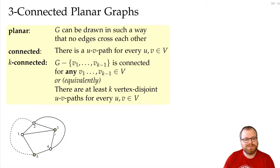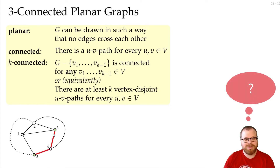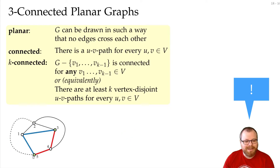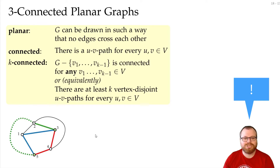What about vertices 5 and 3? We take this edge here, we take that path, we take that path, and now we see why the previous graph was not 3-connected. There is only this edge left, so to take another path from 5 to 3 we have to pick this edge. So without this edge, the graph cannot be 3-connected.